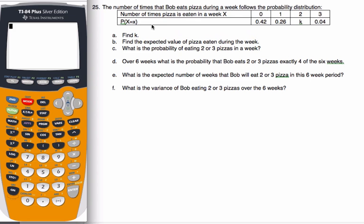Okay, so for this problem here, we have probability distribution of Bob eating pizza during the week, and he either eats the pizza zero times a week, once, twice, or three times a week. And these are all the probabilities.